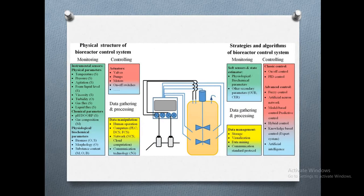Now let us look at the physical structure of the biocontrol system. A fermenter is connected to an automated computer system. The physical parameters and instrumental sensors to monitor include temperature, pressure, agitation speed, foam liquid level, viscosity, turbidity, gas flux, and liquid flux.